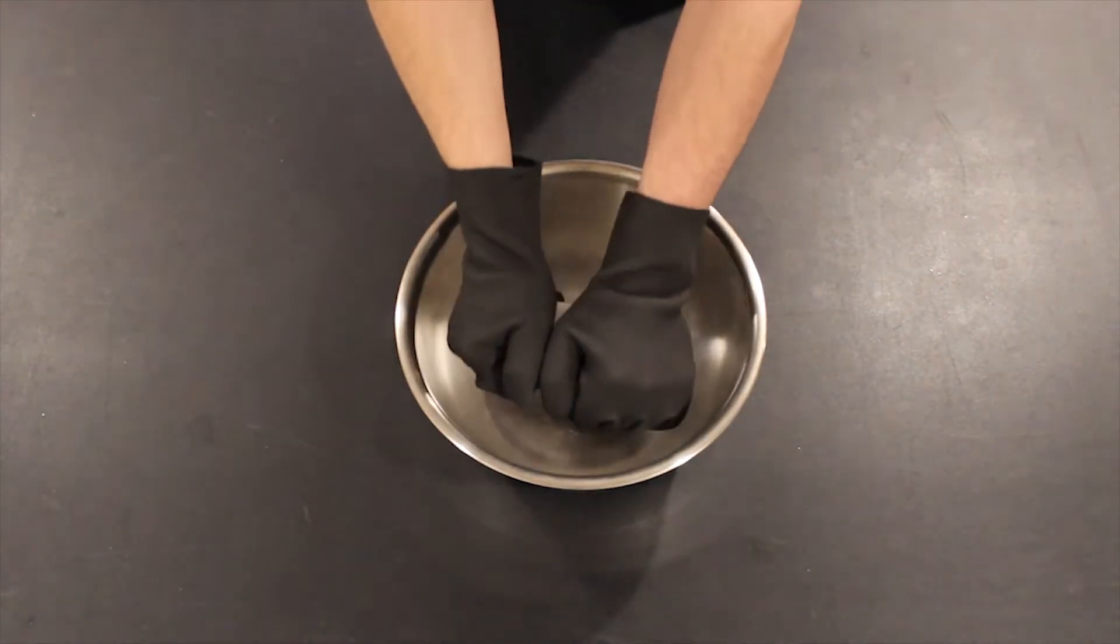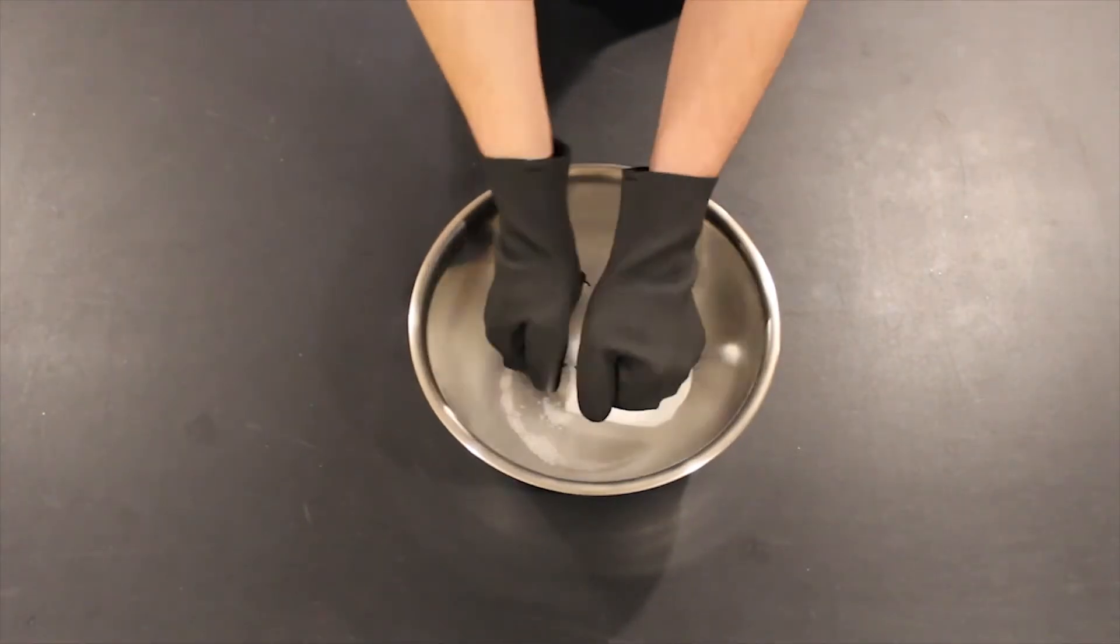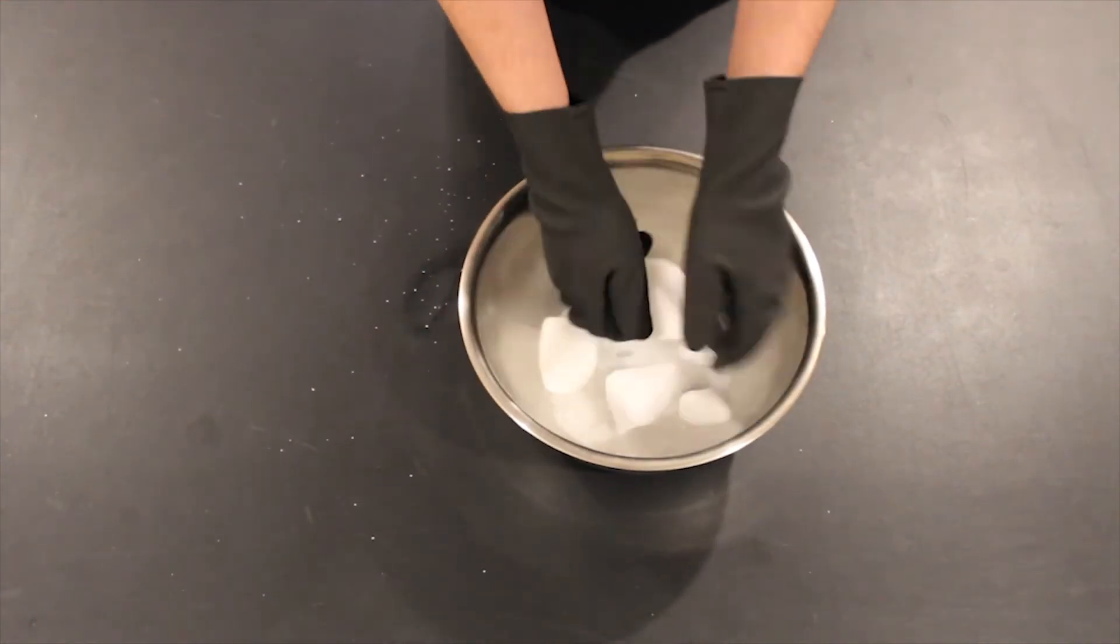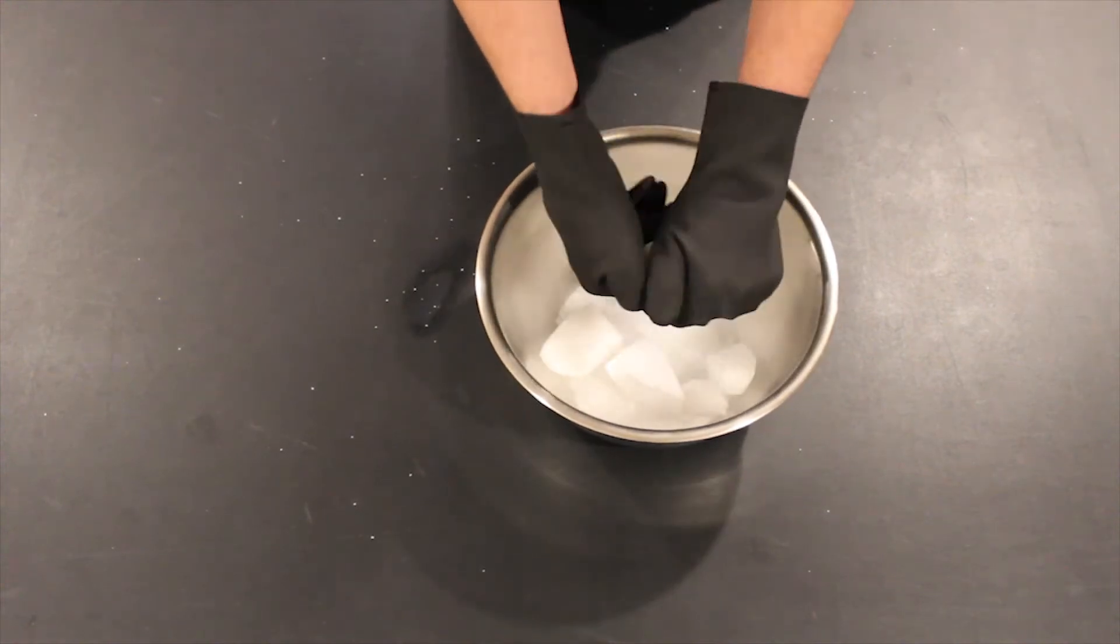We can start out by putting a fairly large amount of dry ice into a steel mixing bowl and crushing it up into smaller pieces that will fit in the bottom better and provide more surface area to cool the acetone fast.